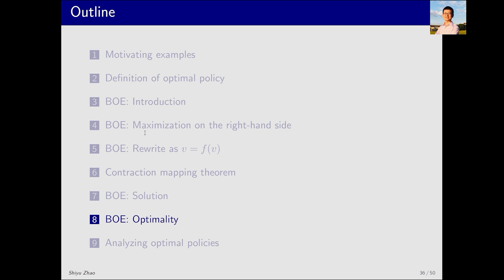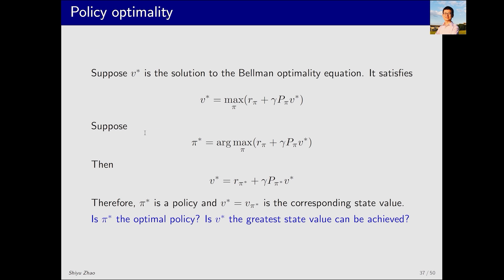Let's further analyze the optimality of the solution to the Bellman optimality equation. Suppose v star is the solution to this Bellman optimality equation, which can be obtained using the algorithm we mentioned just now. Then, pi star represents the optimal solution for v star, meaning we fix v star first and then solve a policy pi, which we denote as pi star. Consequently, this equation transforms into this one by removing the max pi and replacing it with pi star, turning it into a Bellman equation. As we know, every Bellman equation corresponds to a specific policy, in this case pi star. Therefore, v star here is essentially v pi star, which is the state value corresponding to pi star. This reveals that the Bellman optimality equation is a special Bellman equation. Whether this policy is indeed optimal and whether v star or v pi star represents the greatest state value are still questions to be answered.